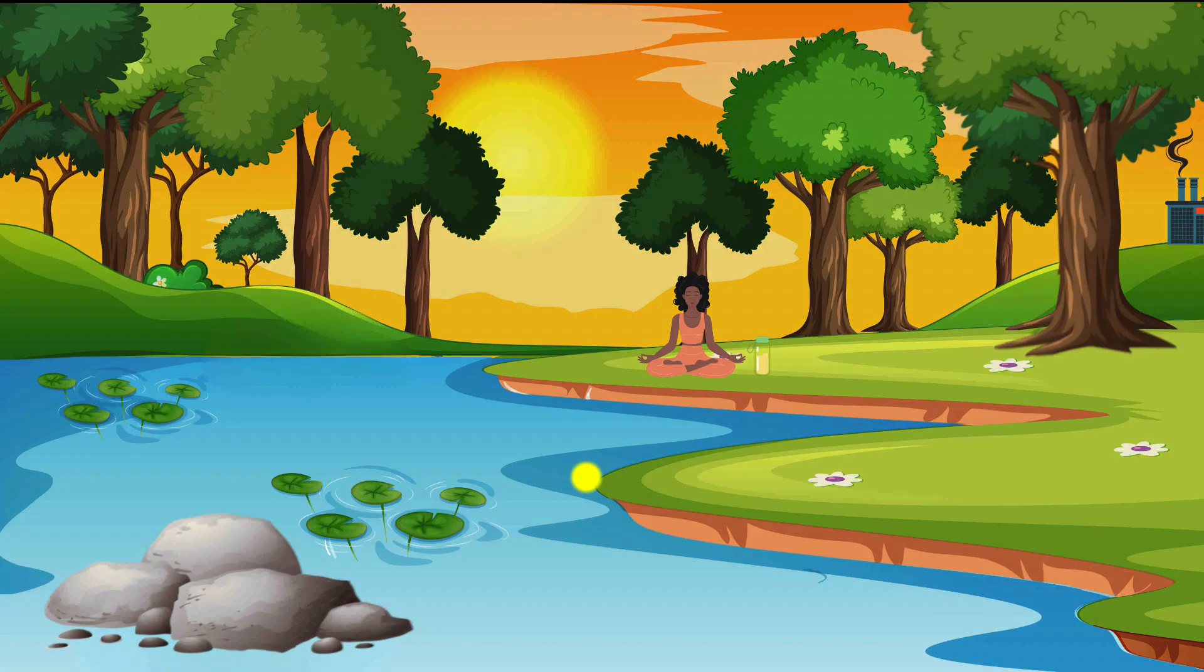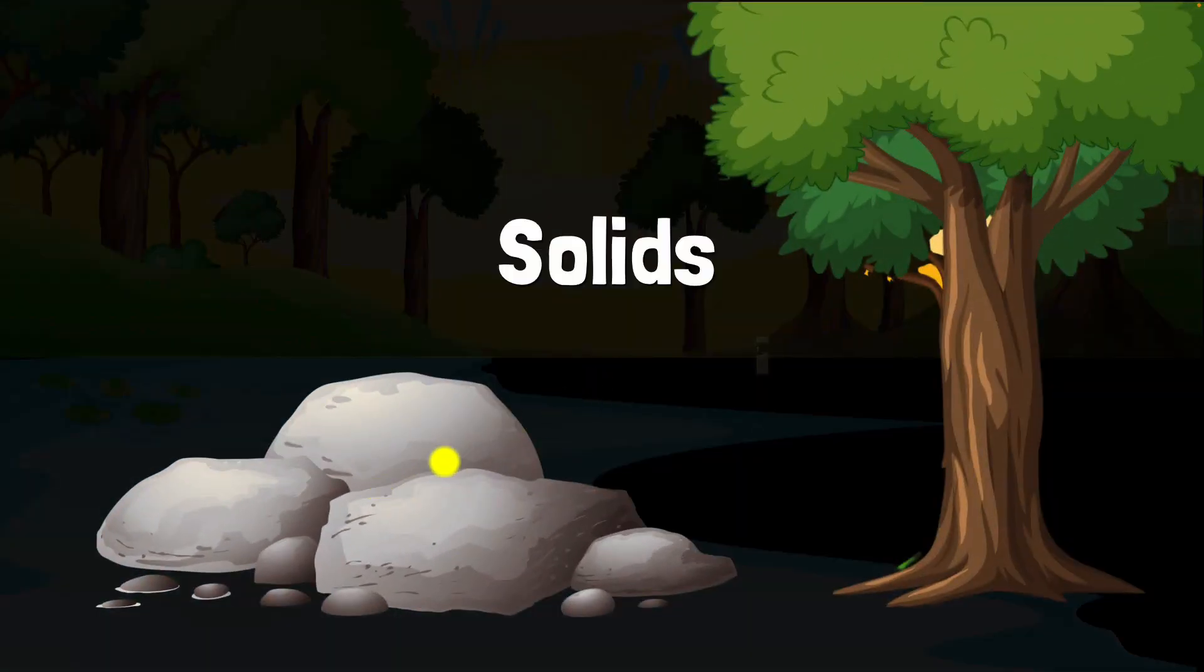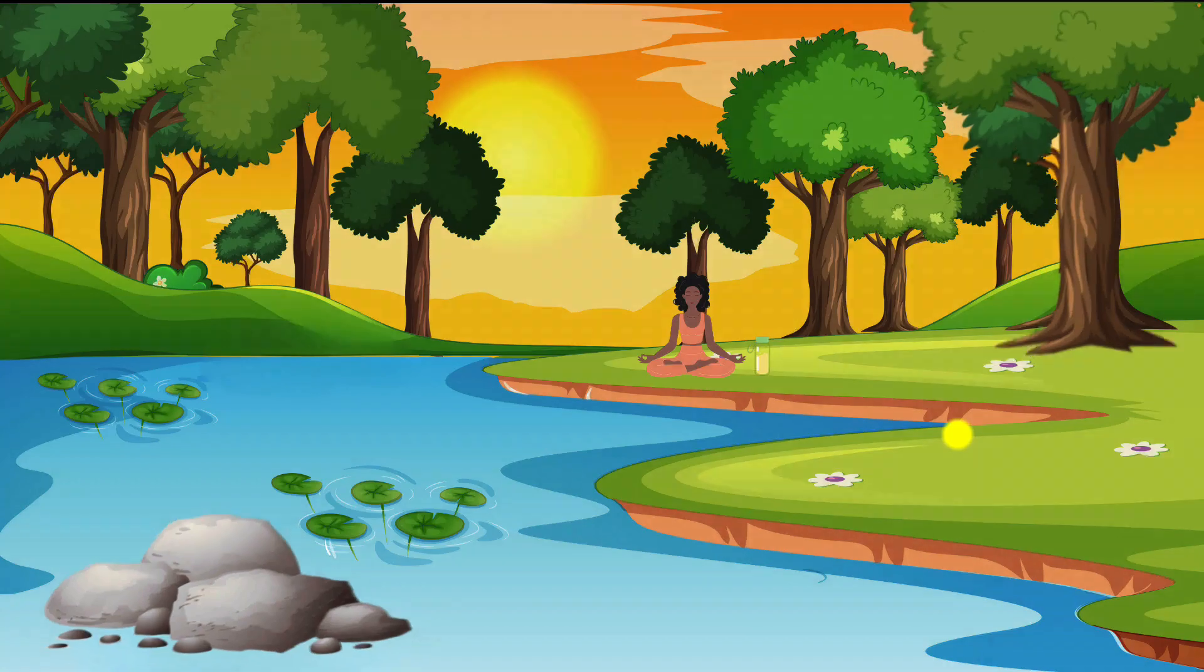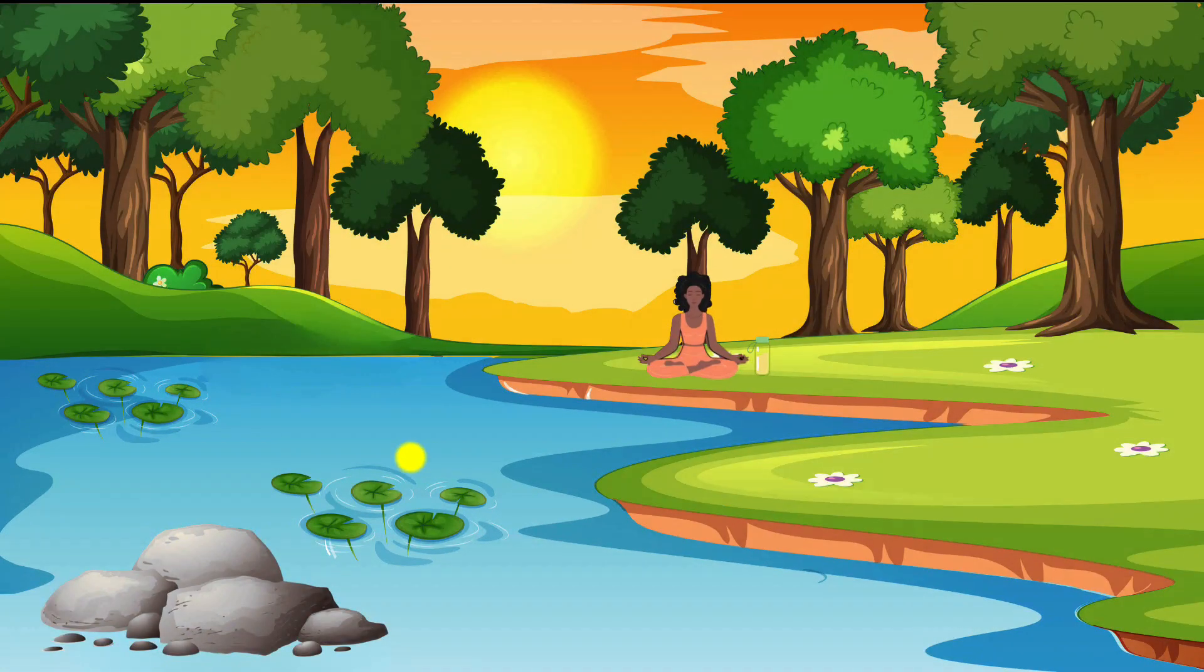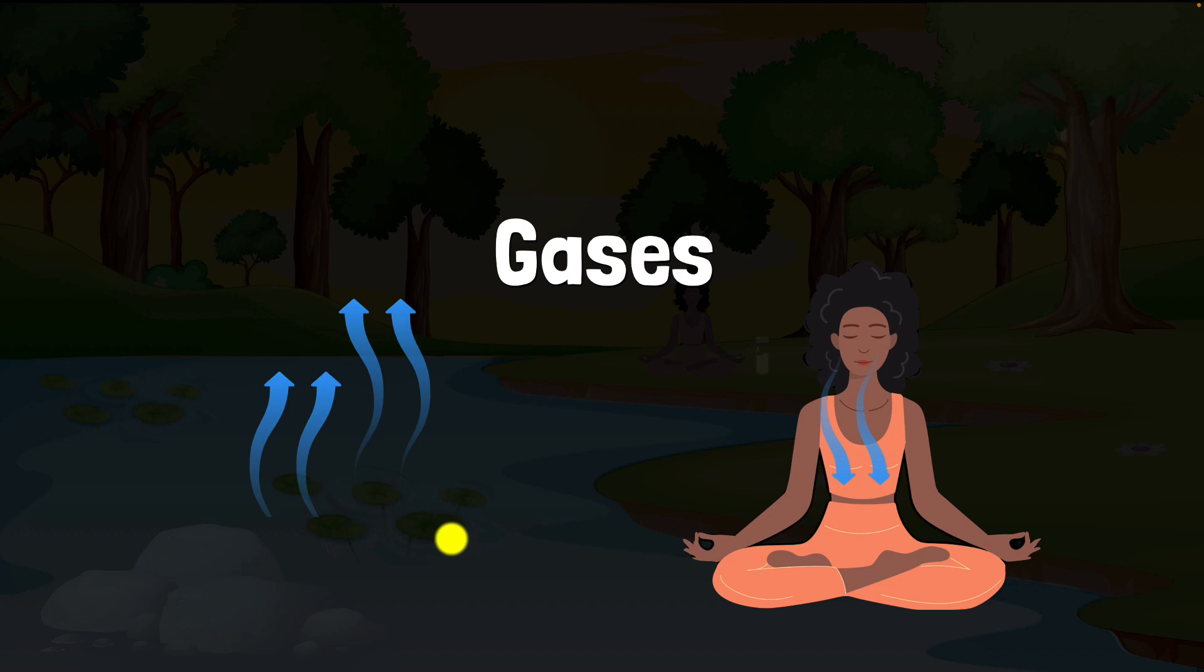When you look around, you find three states of matter. We have the solids that you find in the rocks and the trees. Then you have the liquids like the lemonade that you're carrying or the water in the lake. And finally, we have the gases. For example, the oxygen that you breathe in and the carbon dioxide you give out. You also have humidity, which is basically water vapors and you also have nitrogen in the air. All of these are examples of gases.